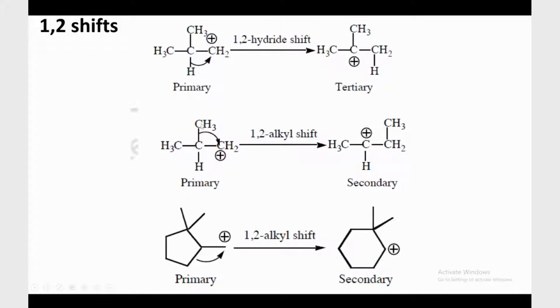But if we move the alkyl group, that is CH3 group, that is called alkyl shift. Why are we saying it's a 1,2? Because the shift is happening from carbon number one towards carbon number two, or the distance between the two carbons is one and two. So this is called 1,2 alkyl shift, and as a result you get the secondary carbocation.